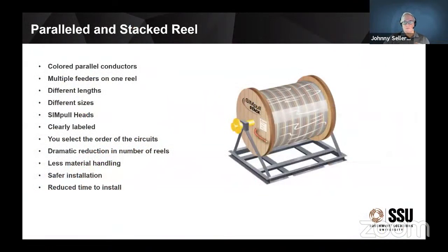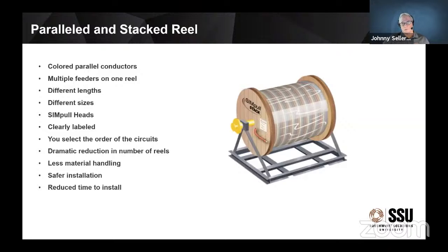Parallel and stack reels — let's talk about what they are. Parallel means we simply take the phase conductors, ABC — your black, red, blue, or brown, orange, yellow, whatever you may have — and instead of having separate reels of black wire, we're going to parallel those conductors together and use colored conductors, putting them on one reel. That reduces the number of reels you have on the job. Colored wire costs exactly the same as black wire. Pretty much the world has moved over to colored conductors, which solves cross-phasing problems when you're terminating in the field.